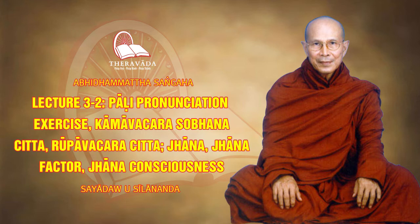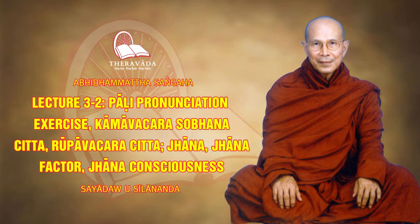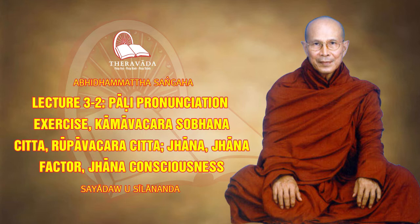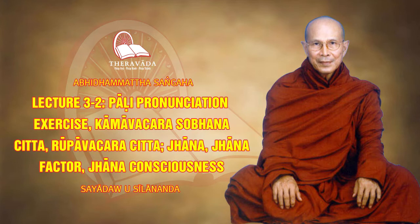The next group is rupa vachara consciousness - form sphere or material sphere consciousness. These form sphere consciousness are fifteen in number and divided into wholesome, resultant, and functional. They arise through the first jhana, second jhana, third jhana, fourth jhana, and fifth jhana.